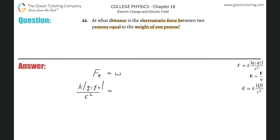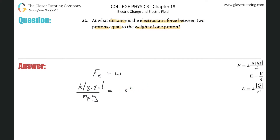How do we find the weight of something? It's simply equal to mg — the mass of a proton times gravity. They're asking us at what distance are these things equal, so literally all we have to do is solve for R. Move R squared out of the denominator on the left to the numerator on the right, then take the square root of both sides, and here's our formula.